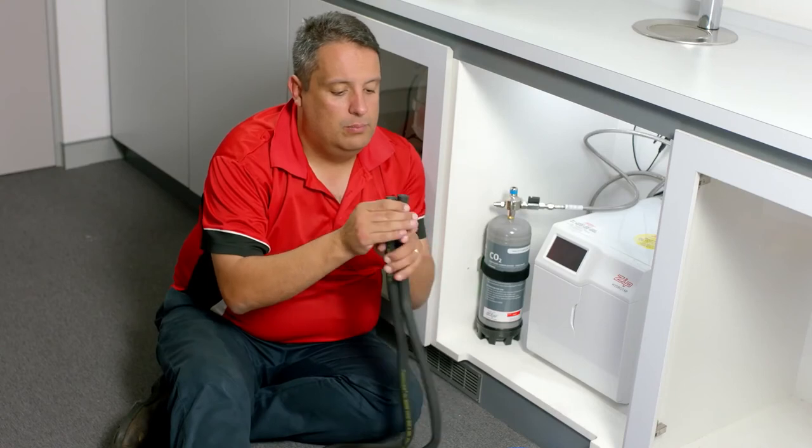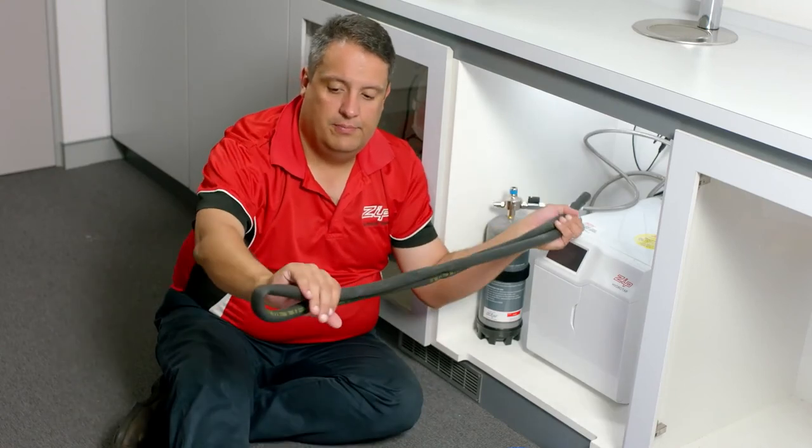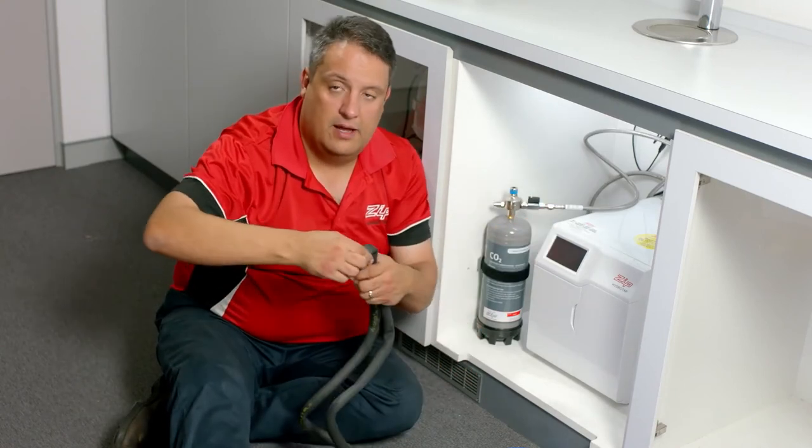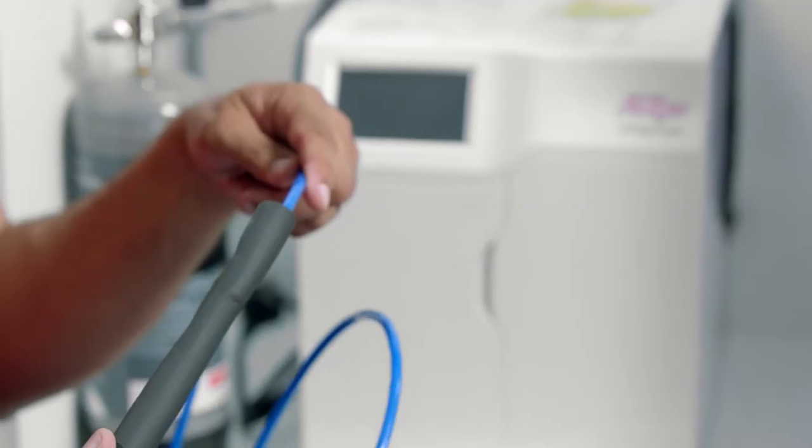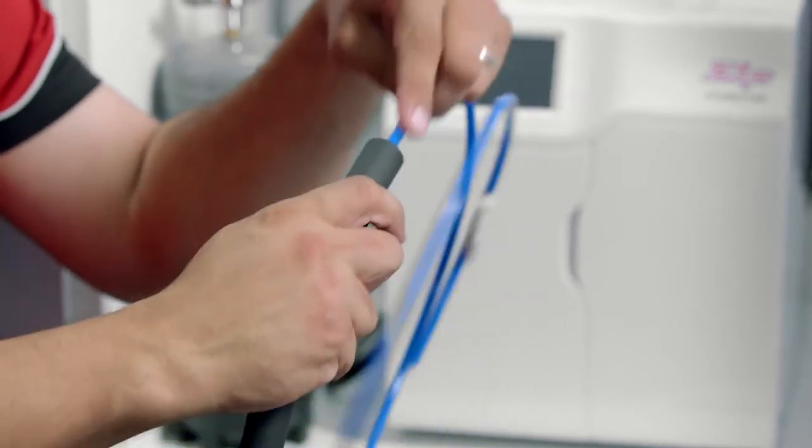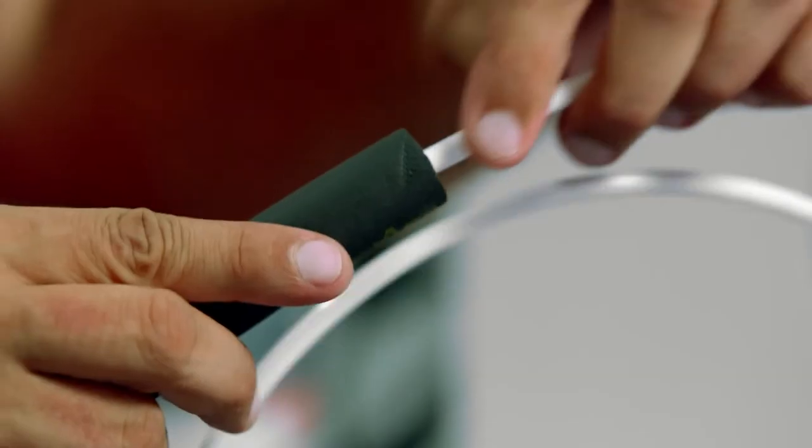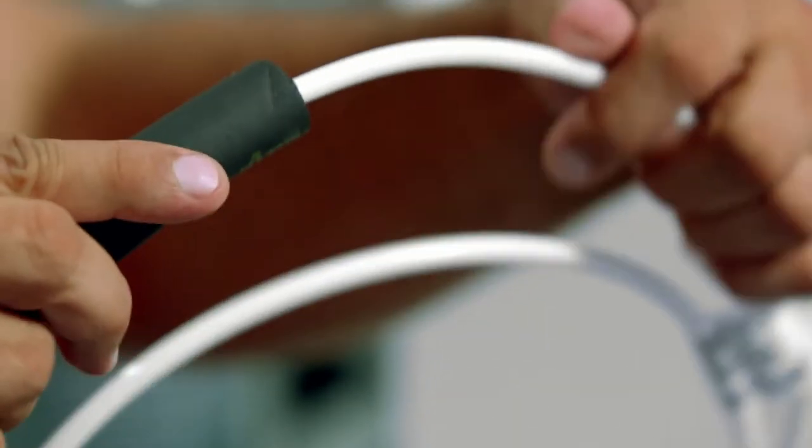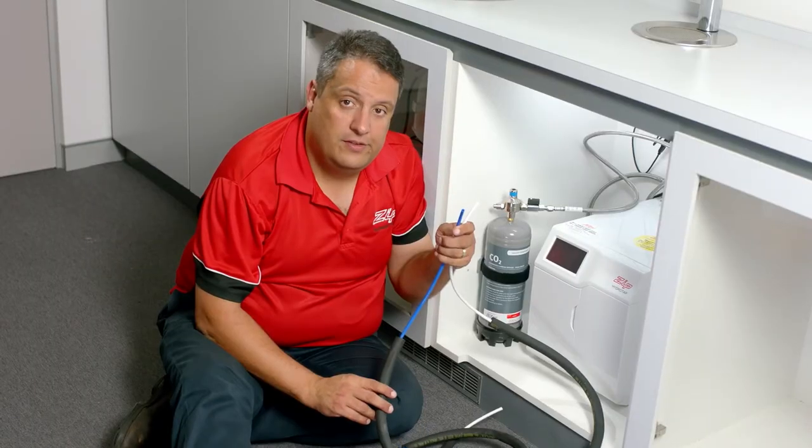Cut or break the insulation. Then, grabbing either the blue or white hose, feed it through one end of the insulation. Once you've fitted the insulation to the hoses, you need to fit the hoses to the tap assembly.